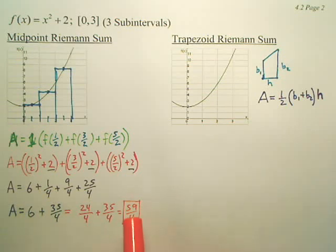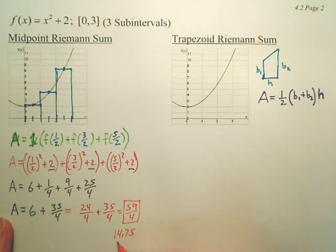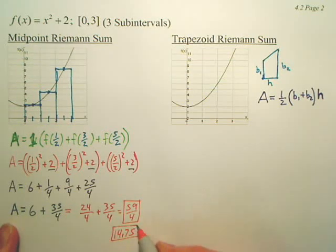The area under the curve would be 59 fourths, which is a little bit less than 15. Wait, not 4.75, it's 14.75. You don't have to put that, but that's what it would be.